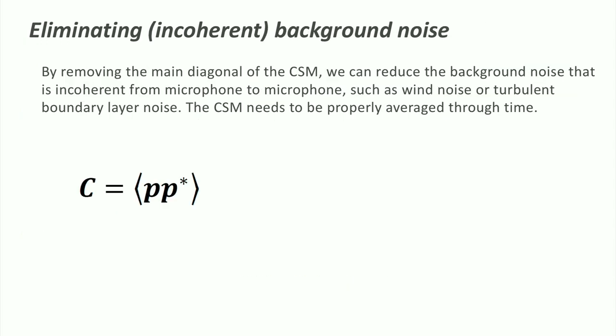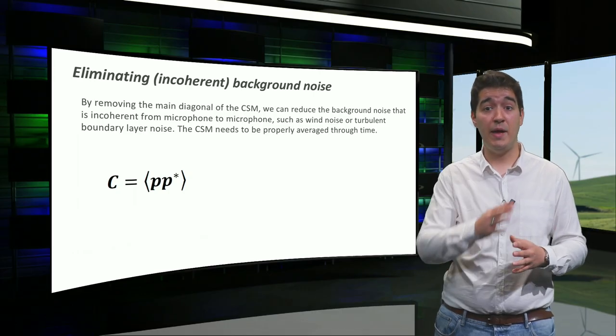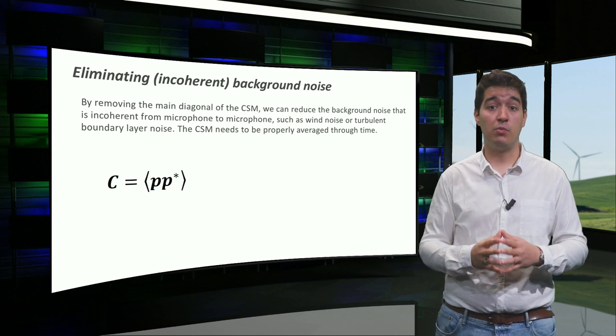Another advantage of beamforming is that incoherent background noise, such as wind noise or turbulent boundary layer noise, can be eliminated. Since these noises mostly contribute to the main diagonal of the cross-spectral matrix, we can improve the results by removing this diagonal.